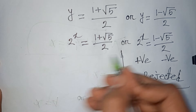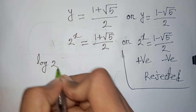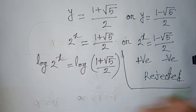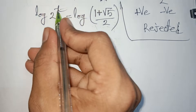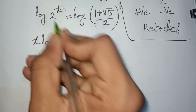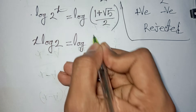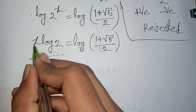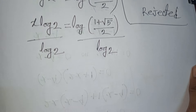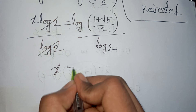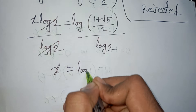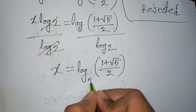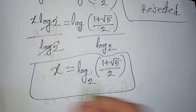From the valid solution, 2^x equals (1 + √5)/2. Taking the logarithm of both sides: log(2^x) equals log((1 + √5)/2). The exponent x moves down, giving x·log 2 equals log((1 + √5)/2). Dividing both sides by log 2, we get x equals log base 2 of ((1 + √5)/2). This is our final answer.